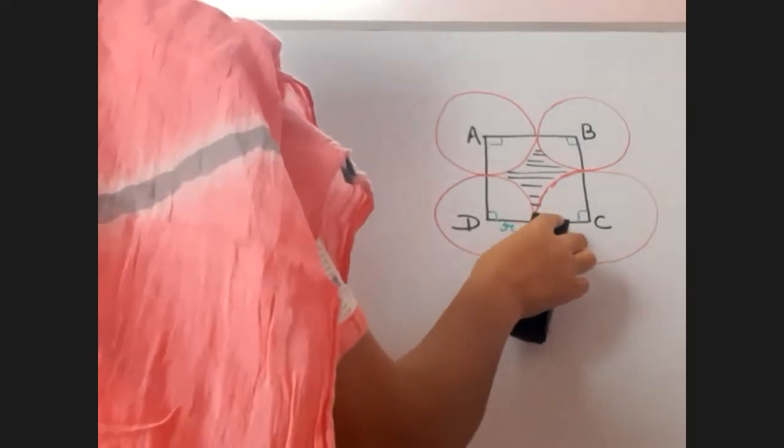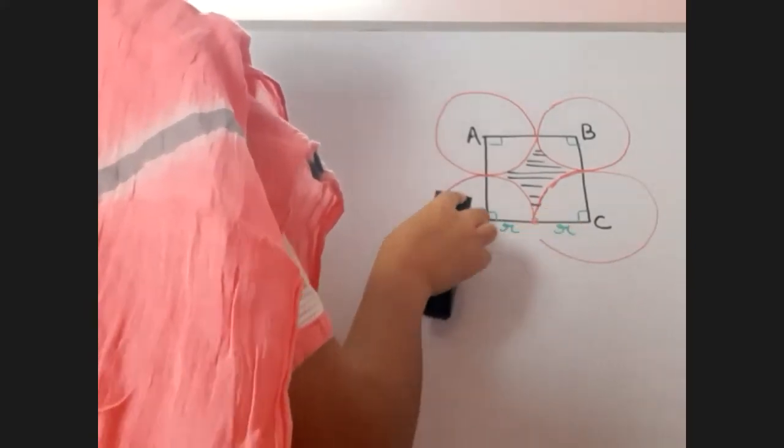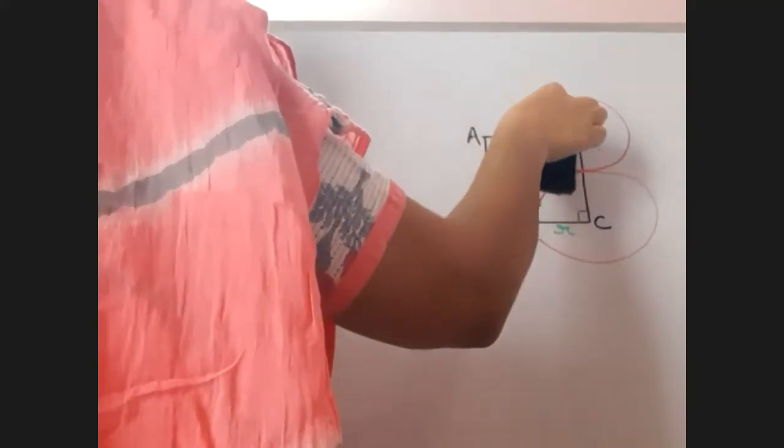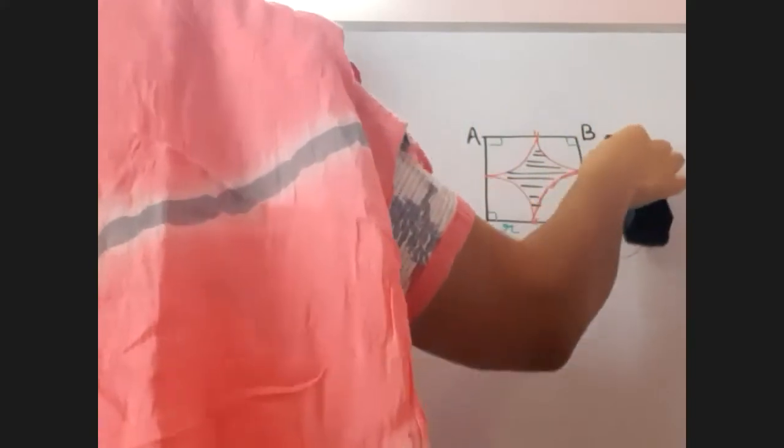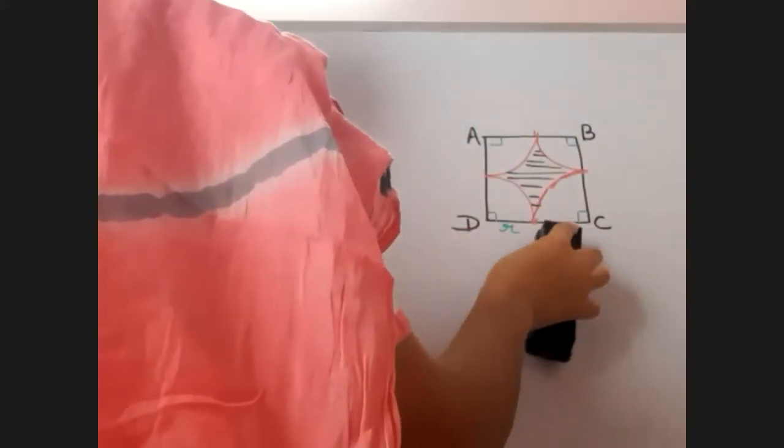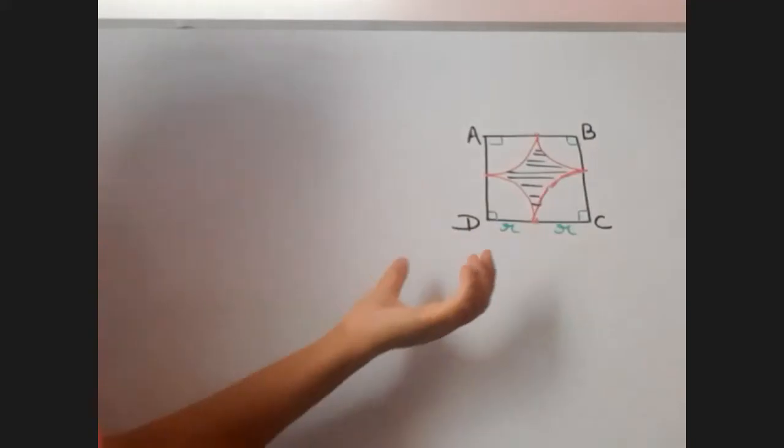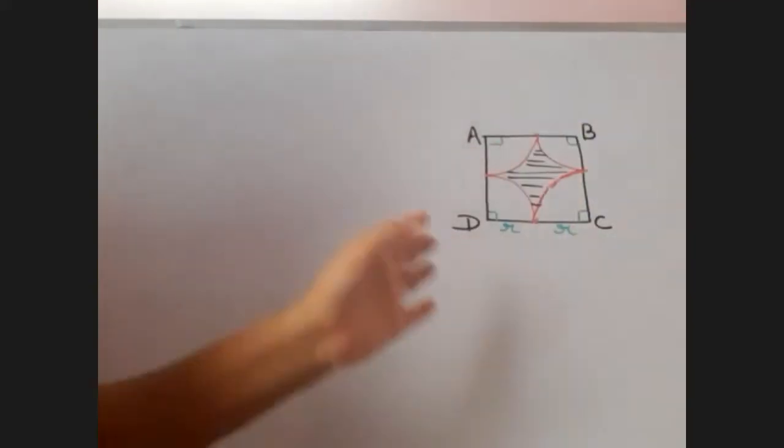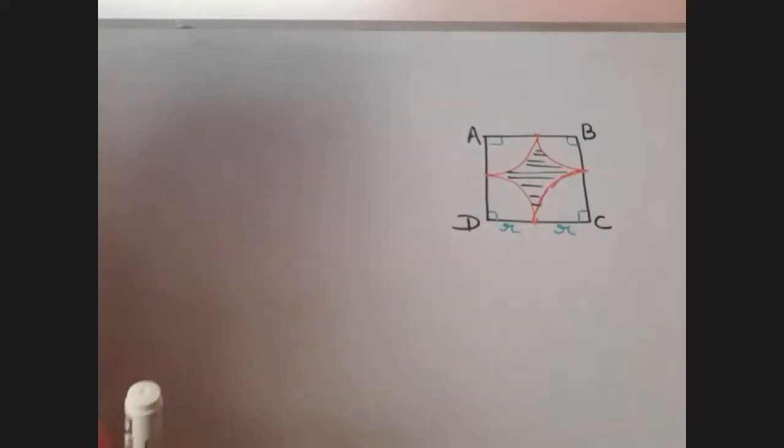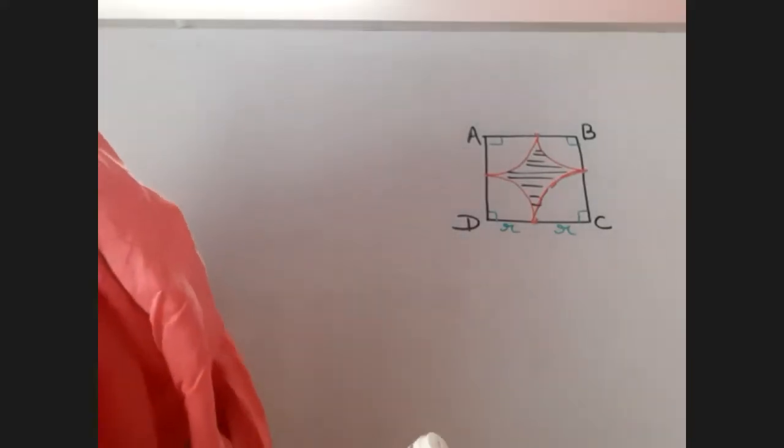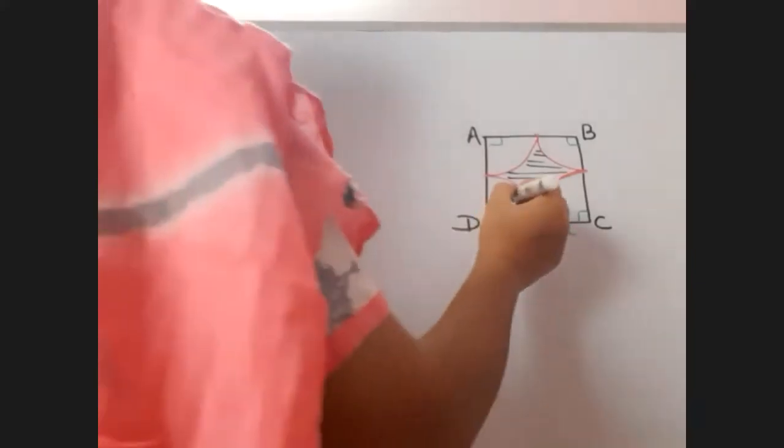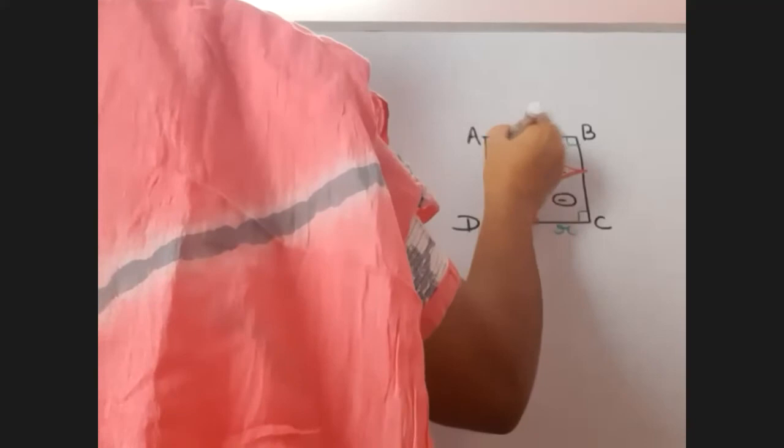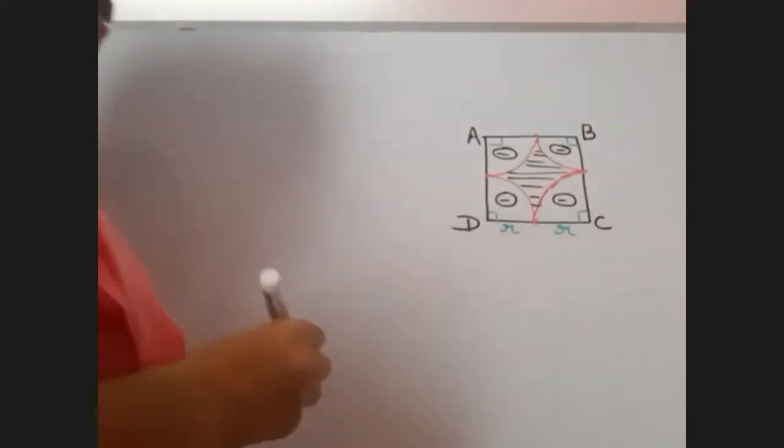Now, for the time being, if you allow me, I just want to remove this. Because shaded portion is lying inside the square. It has got nothing to do with the outer circle. Now, can you tell me how to find the area of shaded region? Area of square minus area of four quadrants.